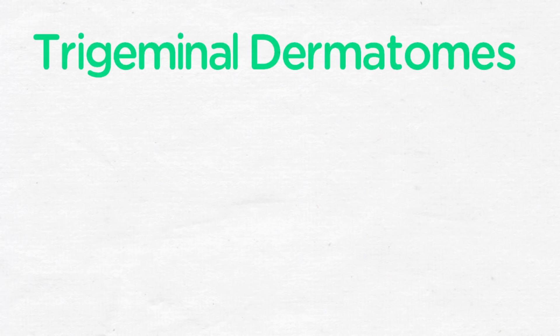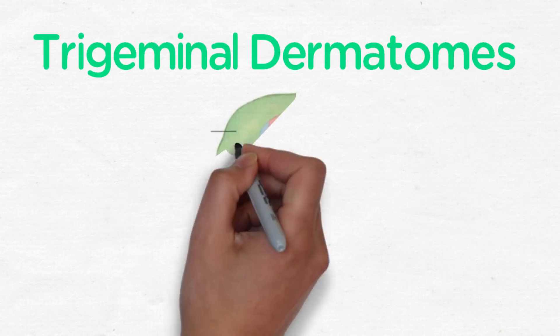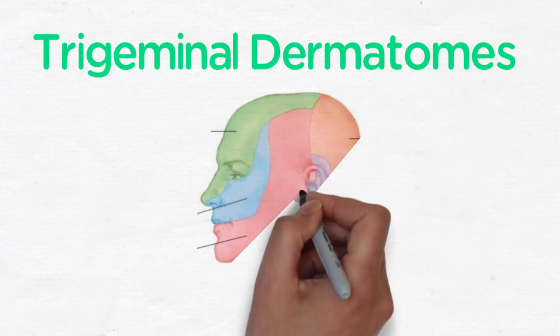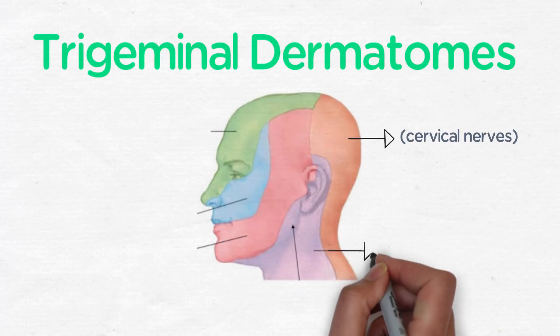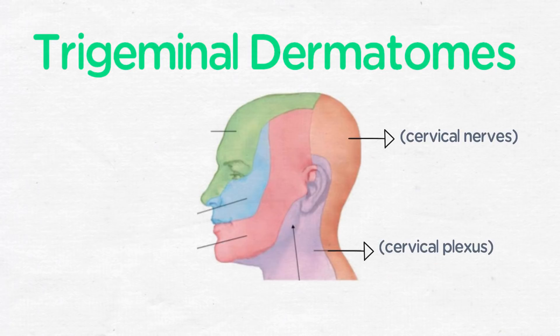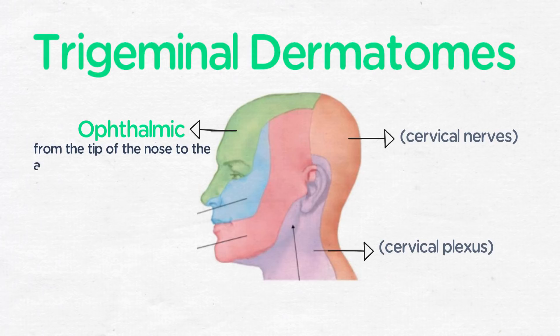The trigeminal dermatomes are innervated by the trigeminal nerve and are divided into three separate areas. The first division is the ophthalmic division and it innervates the skin from the tip of the nose to the anterior scalp and just above the corners of the eye.